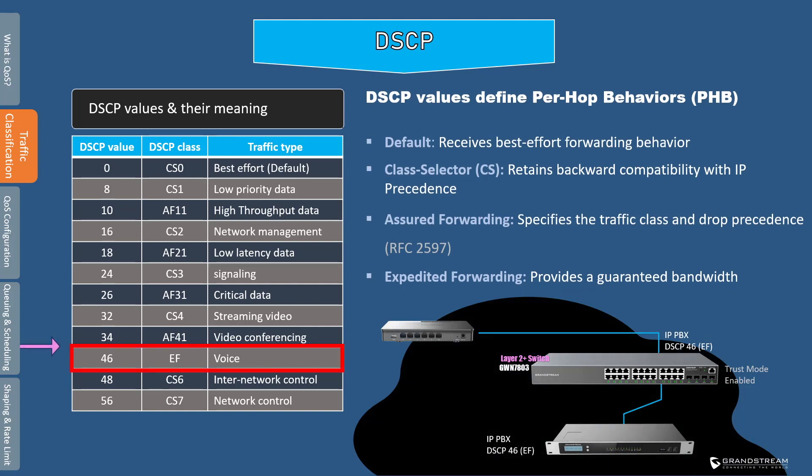The DSCP table shown here does not include all DSCP values and classes, but it includes some of the most used values and the type of traffic that should be assigned to them. For instance, in an environment where voice traffic must be prioritized, the IP PBX can be configured with a DSCP value of 46, which provides the expedited forwarding behavior type. This ensures the switch always prioritizes voice traffic forwarding on the outbound interface. Traffic classification with 802.1p and DSCP is generally confined to an enterprise network, as most internet service providers do not keep incoming QoS information and simply override them.